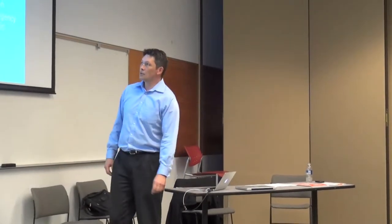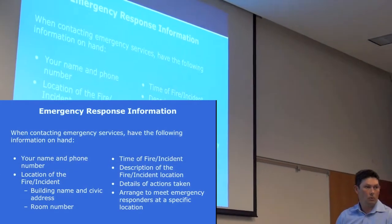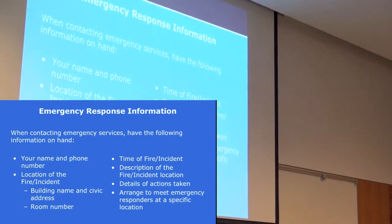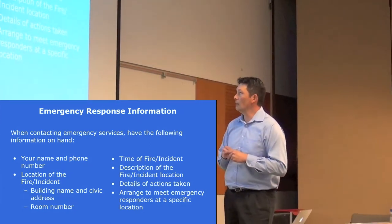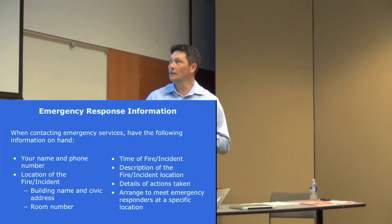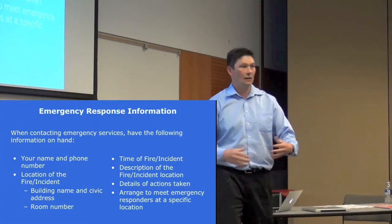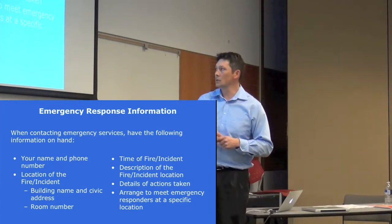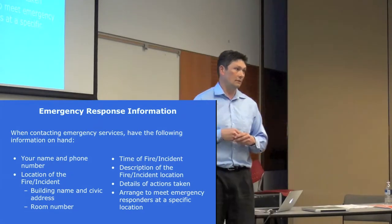The emergency response information you need to know includes the name, number, and location of the incident — where did it happen, what room number, what's going on. It's very important you know exactly where the incident happened so you can relay that to the appropriate people. Emergency personnel also need to know the time of the incident: when did it start, how long has it been burning or releasing? Then you need a description of the incident — if it's a spill and you're not sure what the chemical is, that's the kind of information you need to relay. Also note whether you tried anything, like attempting to put out the fire before evacuating.